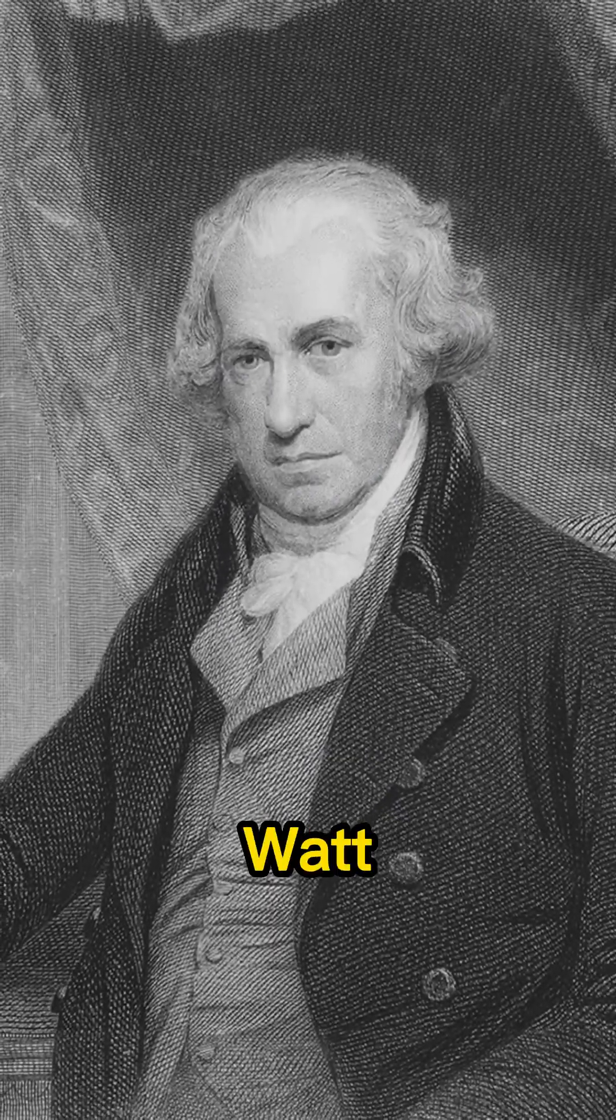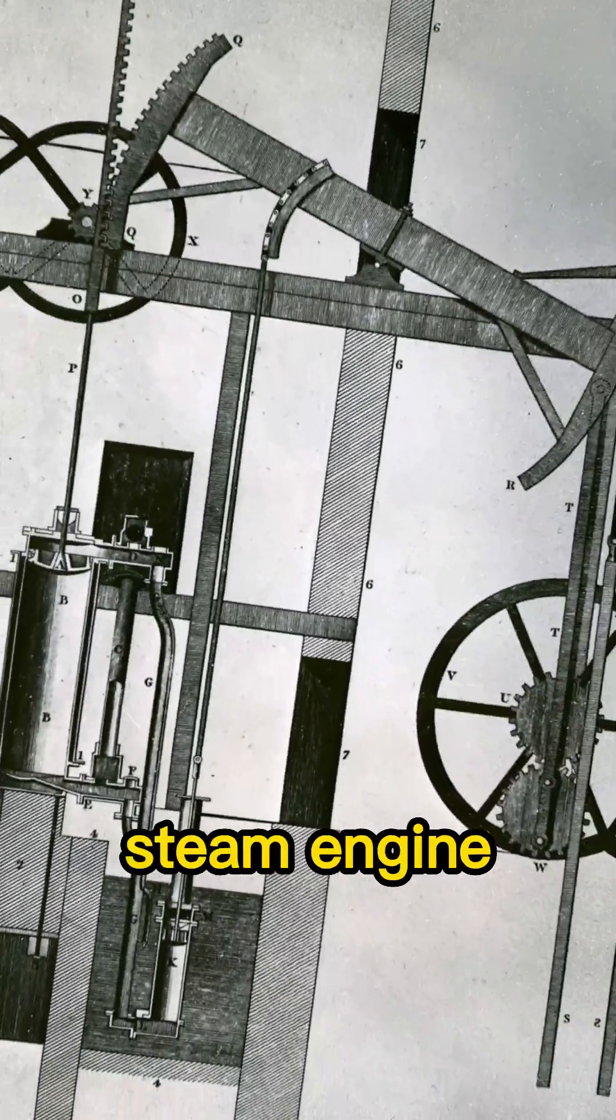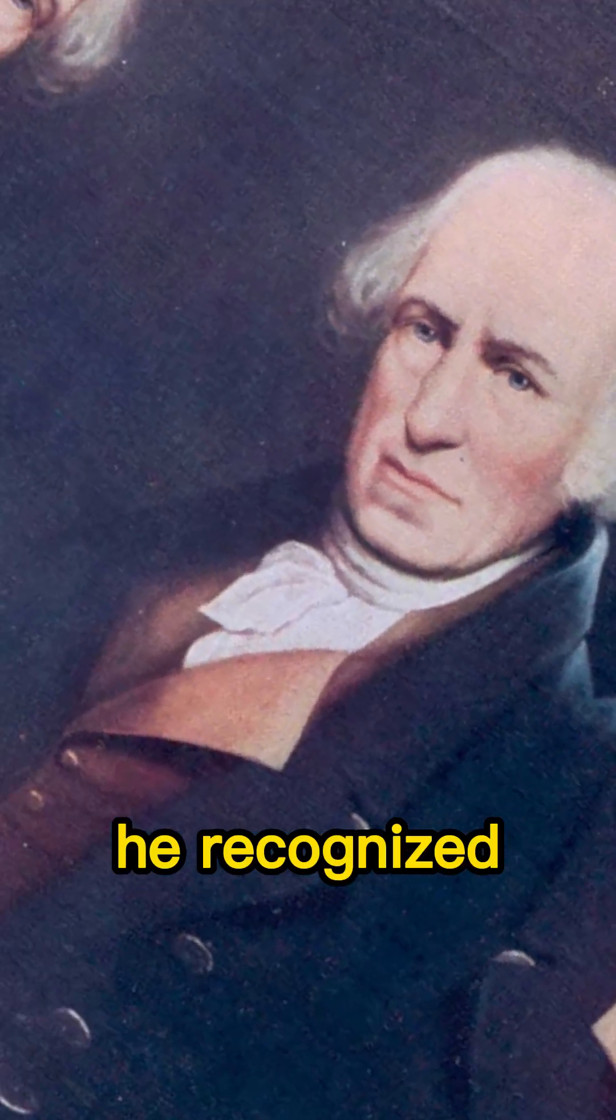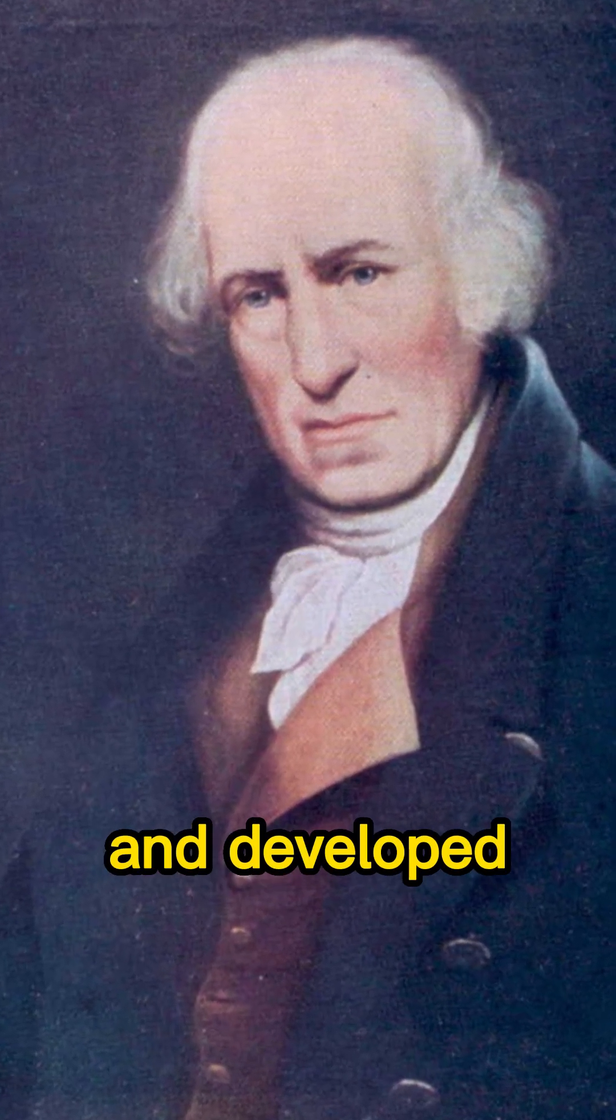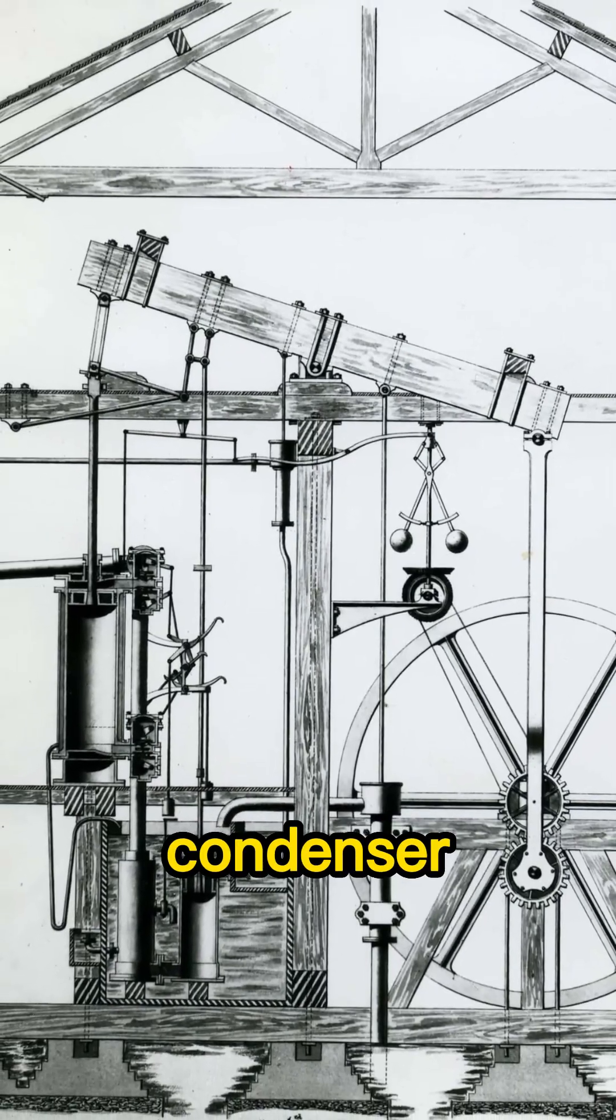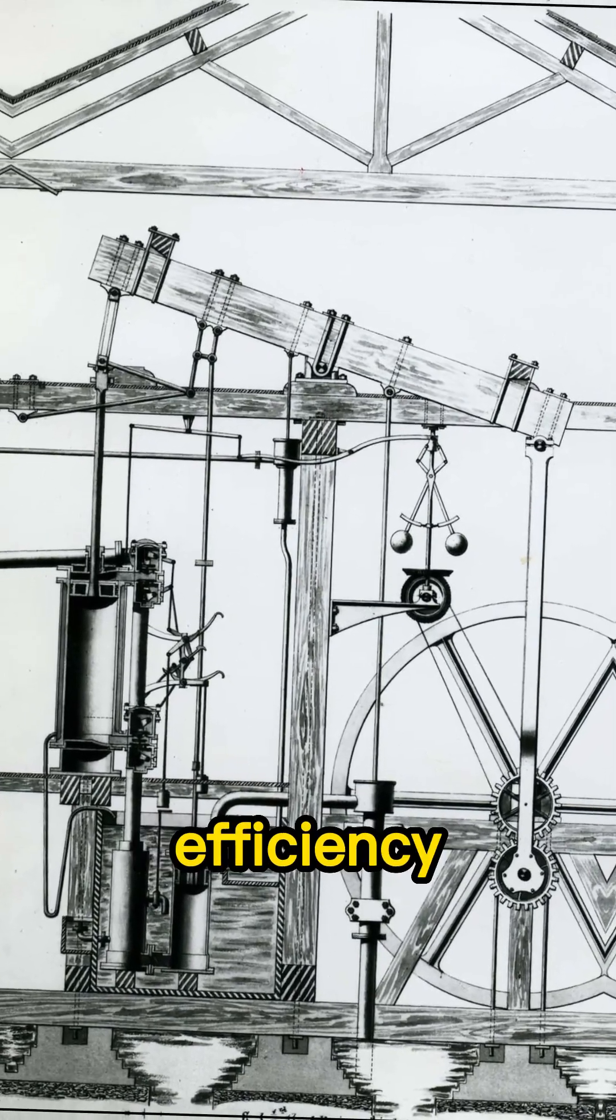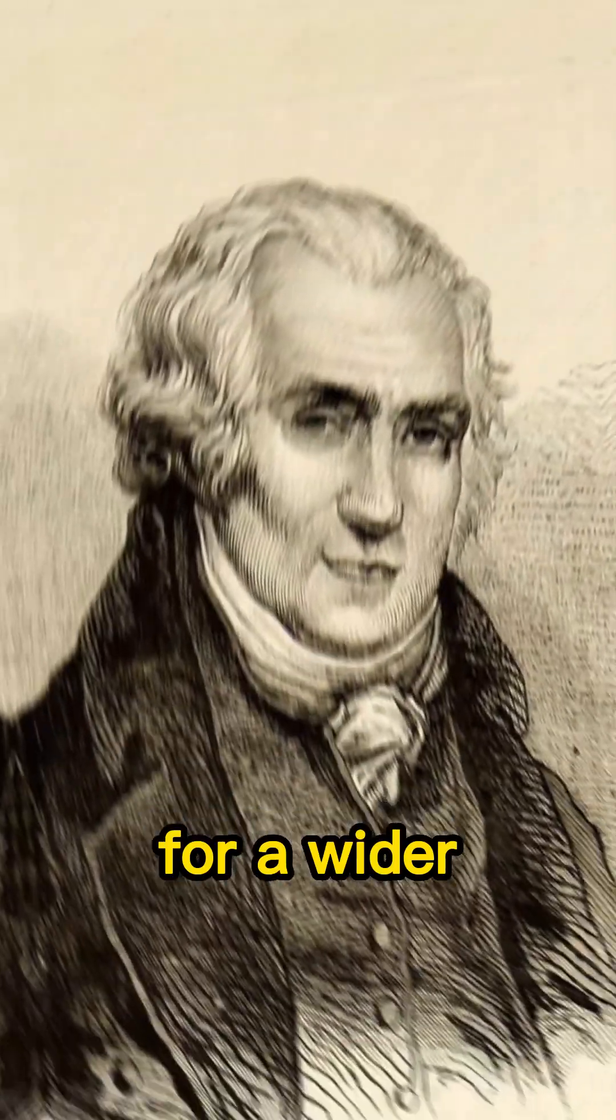In 1765, Watt was asked to repair a Newcomen steam engine, which was used to pump water out of mines. He recognized that the engine was inefficient and developed a new design using a separate condenser, which greatly improved its efficiency and made it suitable for a wider range of applications.